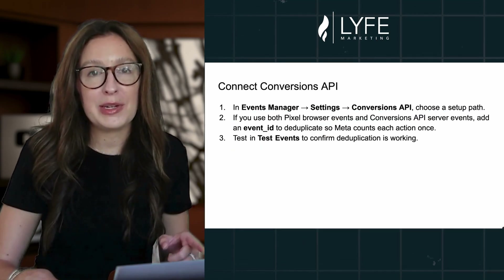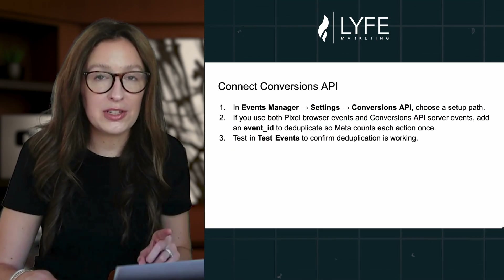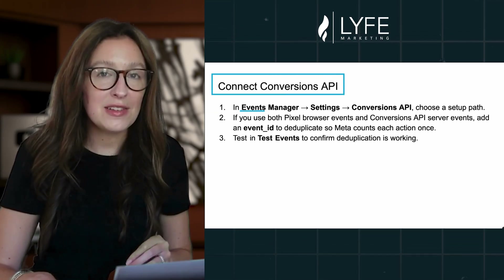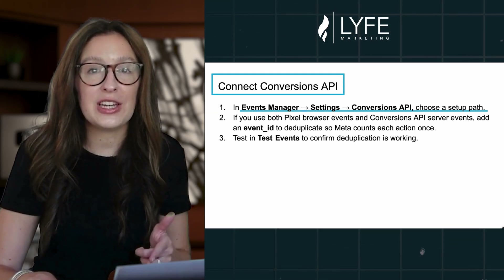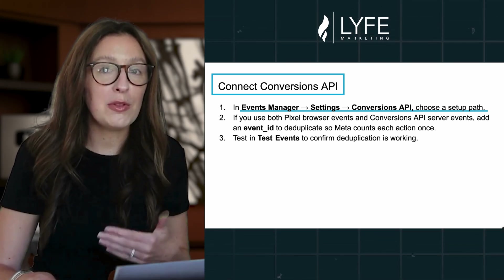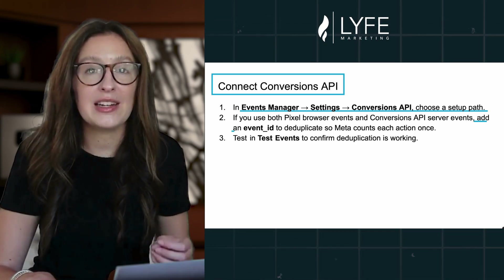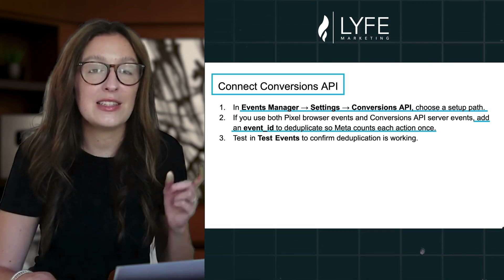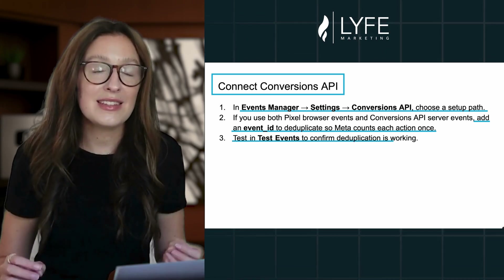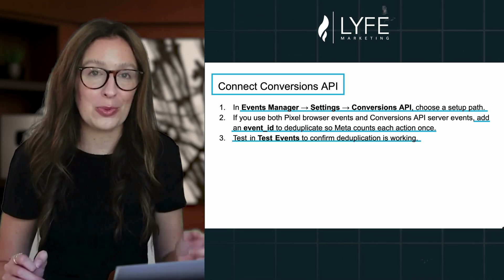And then the last step before we recap: for better reliability beyond the browser, you're going to want to connect the Conversions API. In Events Manager, go to Settings, Conversions API, and choose a setup path. If you use both pixel browser events and Conversions API server events, then you'll add an event ID to deduplicate so that Meta counts each action once, and then test in Test Events to confirm that the deduplication is working.